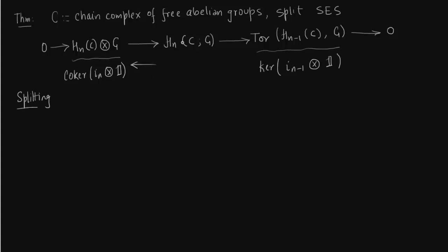To prove splitting, we need to show there is another map from H_n(C, G) back, giving a split short exact sequence. From the short exact sequence we construct a projection map, giving a quotient map from Z_n to H_n. Thus we have a map from C_n to H_n, and similarly C_n to H_{n+1}, all connected by the boundary map delta.